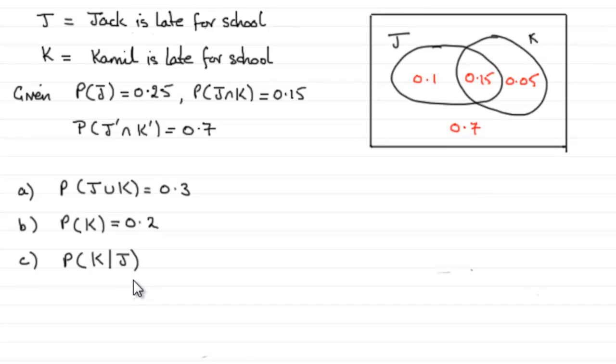Now for part C, we're given that Jack is late for school, and we've got to find out the probability that Camel is also late for school. And that can be represented by this particular notation, the probability of K given J.